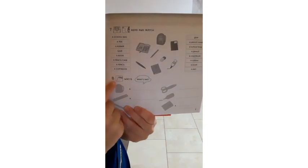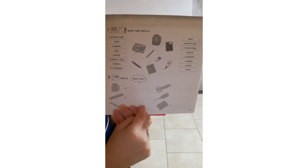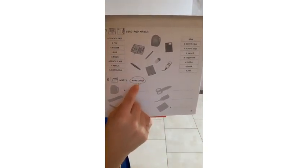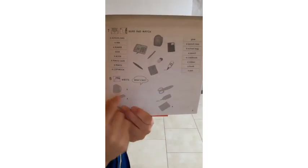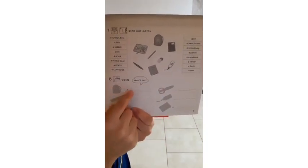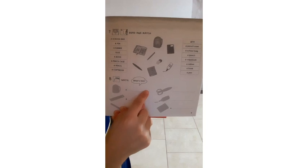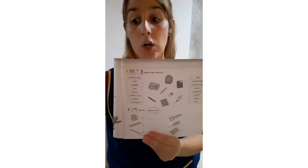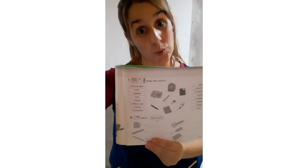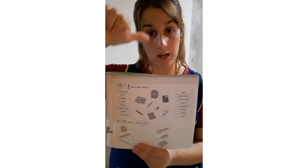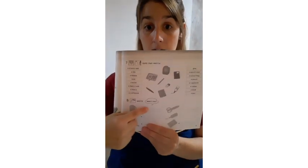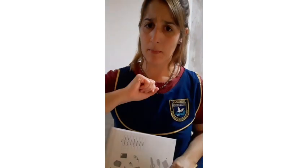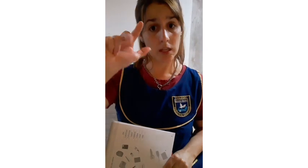Second activity. In the second activity it asks: what is this? And we are going to answer with the name of the school object, and also add what we were playing today — the name, the color, and the size. Big or small.